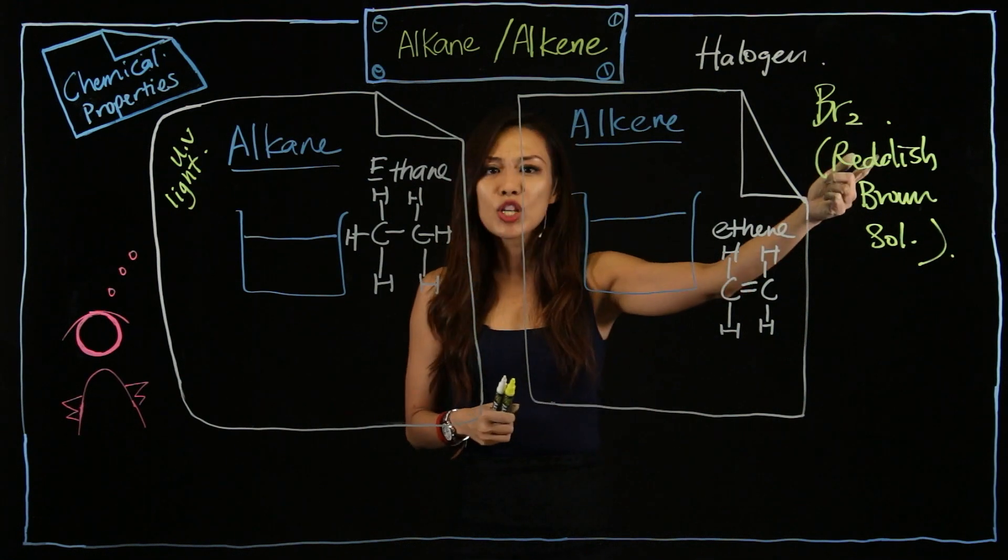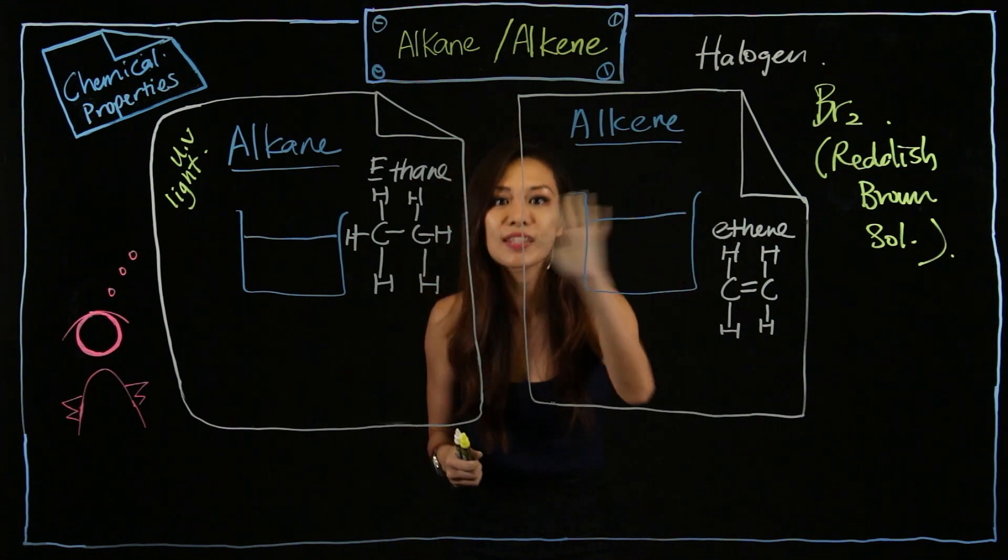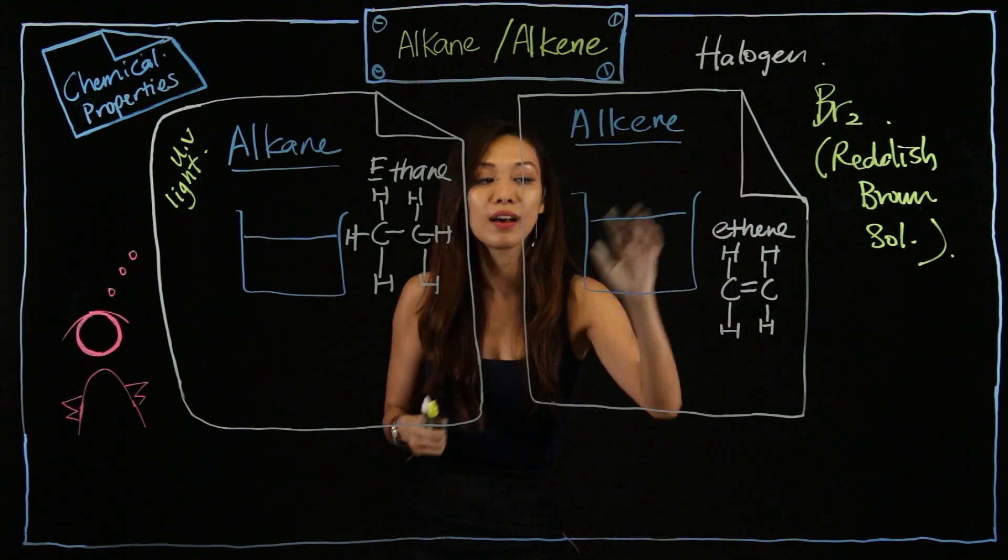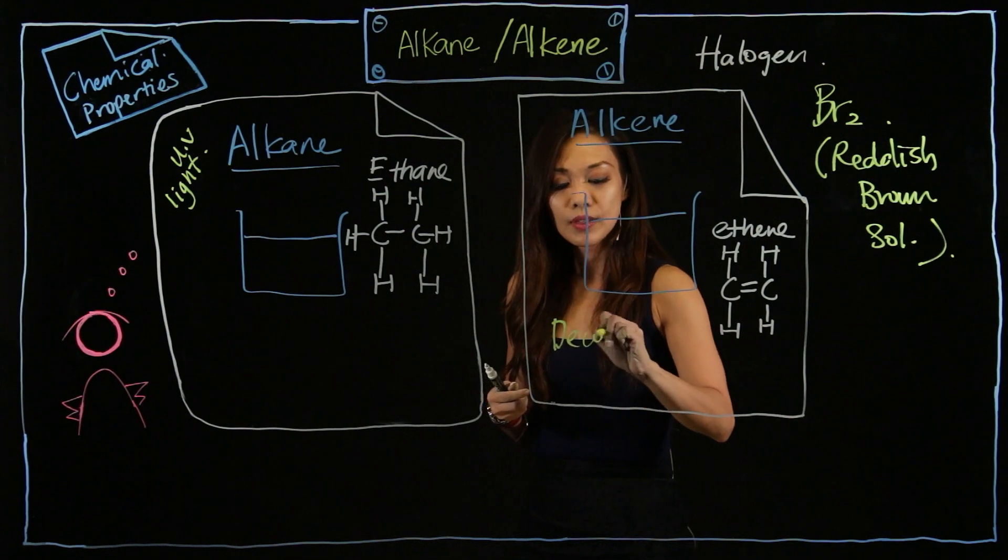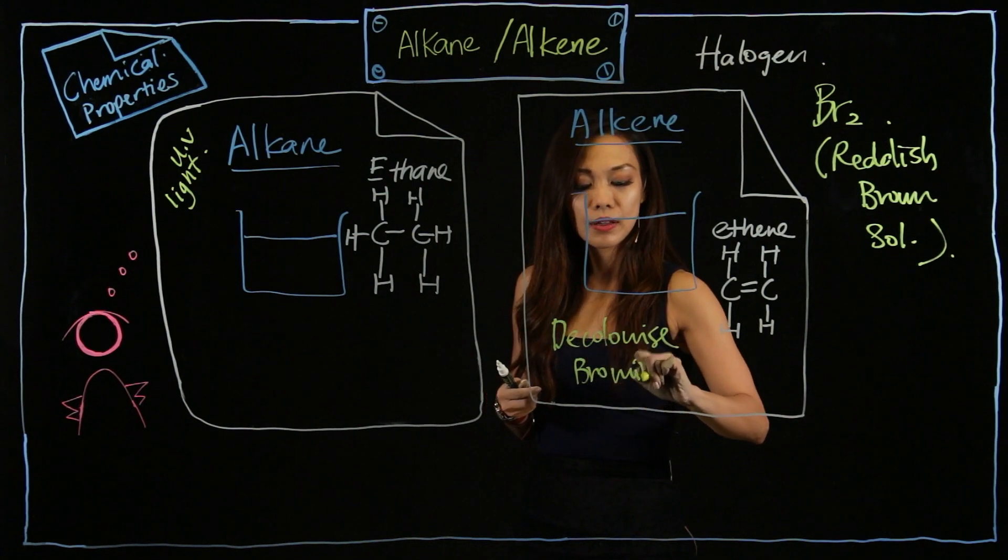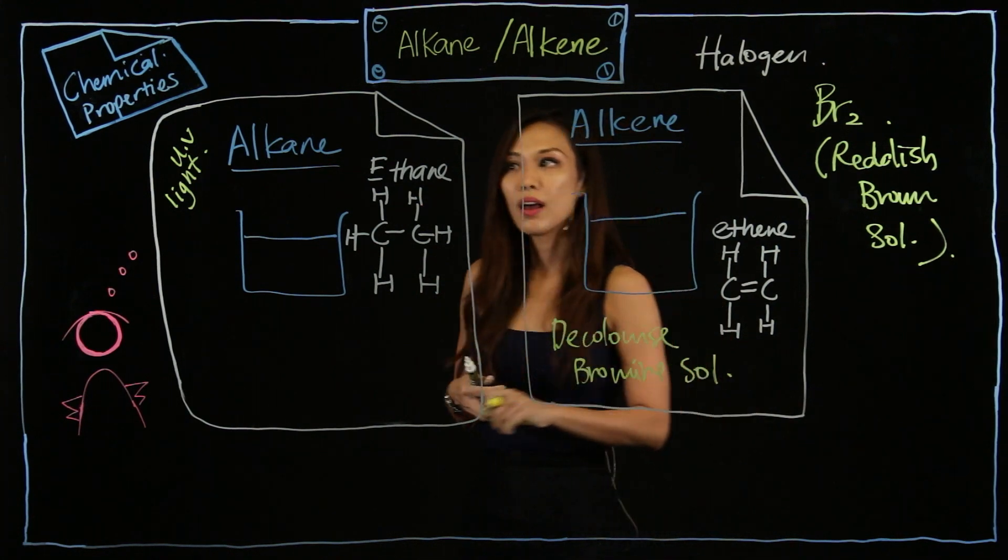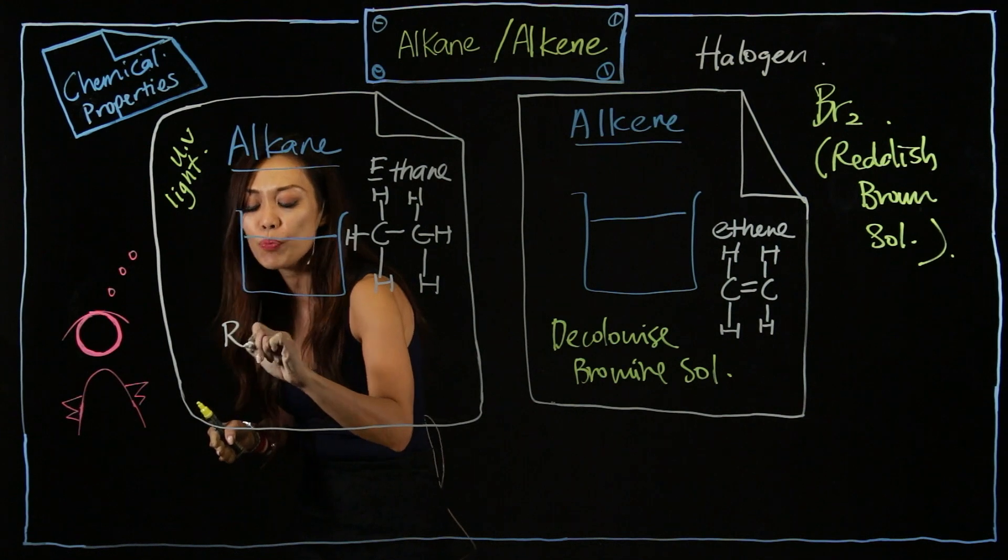As you have seen from the video that I've shown you just now, if this is alkene, the reddish brown solution goes in, they will disappear. So the reddish brown will decolorize bromine solution. However, if this is an alkane, the reddish brown solution remains unchanged.